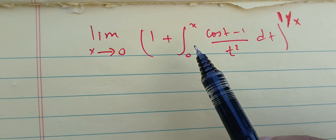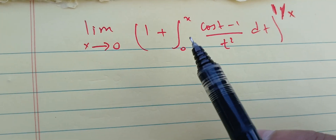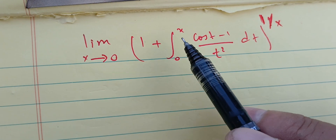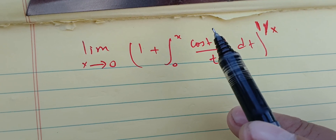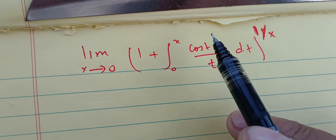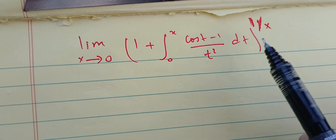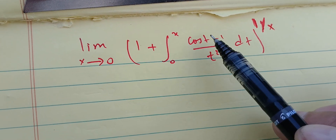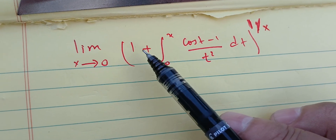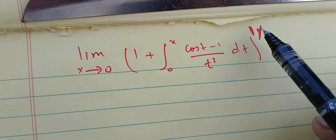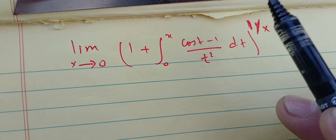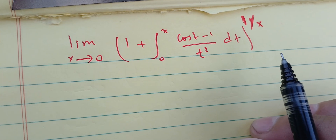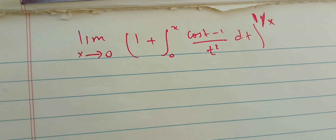Welcome back. In this question we're going to find the limit as x goes to zero of the quantity one plus the integral between zero and x of (cosine t minus one) over t squared, dt, everything raised to one over x. A quick check: when we plug in zero, we have the integral between zero and zero, which is zero, and we have one plus zero which is one raised to one over zero, that's infinity. Therefore we have one to infinity and we cannot conclude.